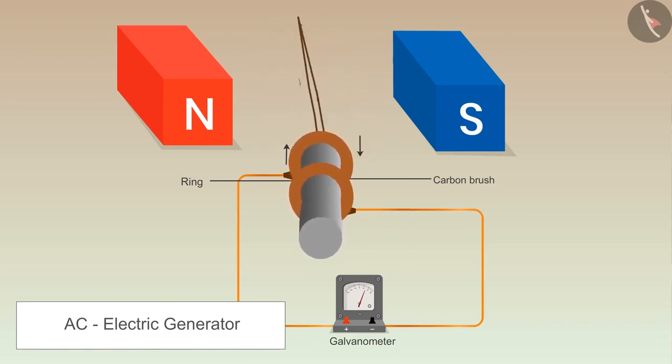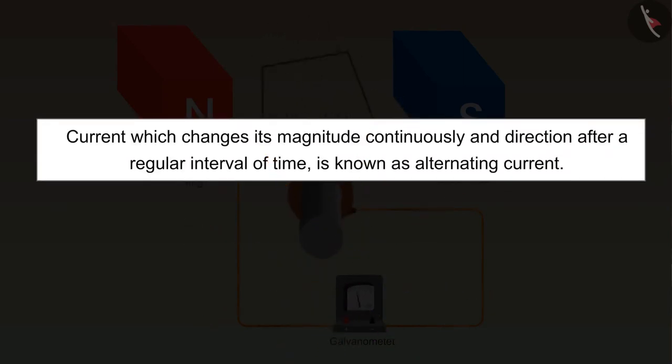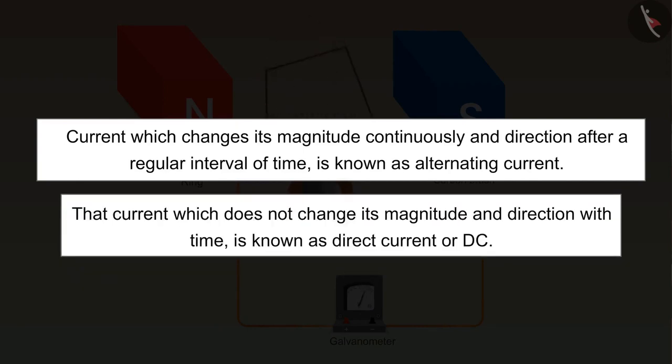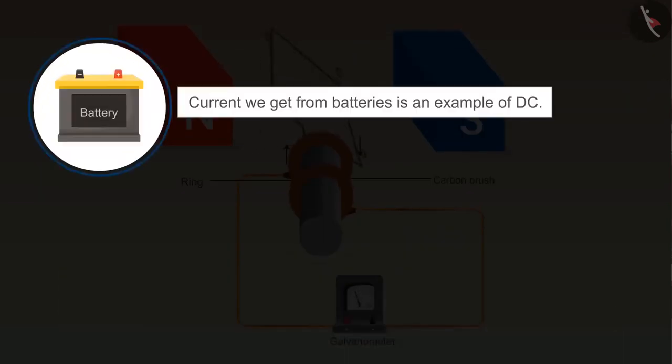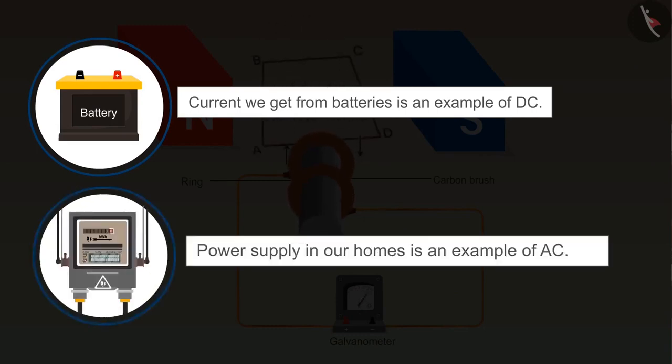What is this AC? The current which changes its magnitude continuously and direction after a regular interval of time is known as alternating current. And the current which does not change its magnitude and direction with time is known as direct current or DC. The current we get from batteries is an example of DC, whereas the power supply in our homes is an example of AC.